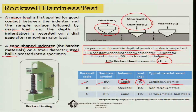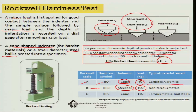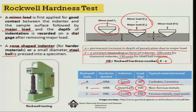Scale B, HRB, uses a steel ball indenter with a load of about 100 kg to create plastic deformation; it is typically used for non-ferrous metals. Scale C, HRC, uses a cone shape with a 150 kg load and is used for ferrous metals and tool steels.